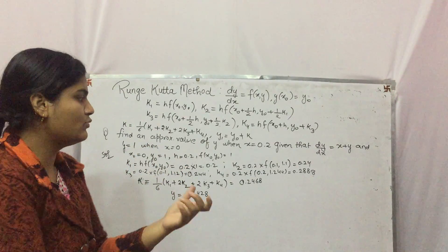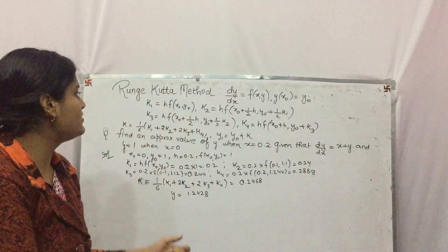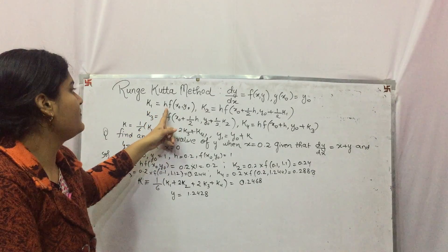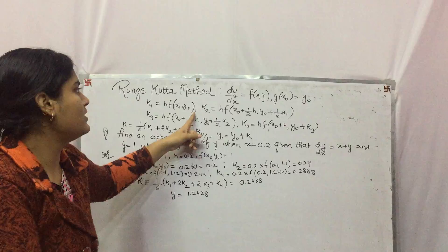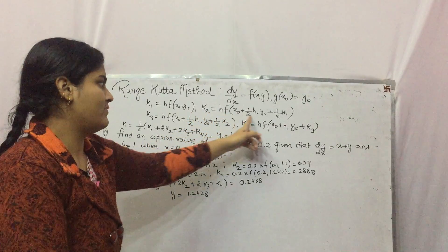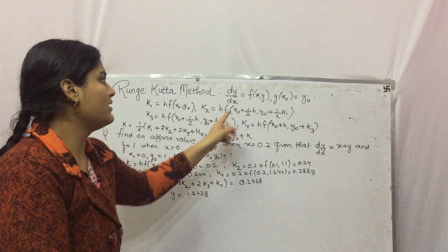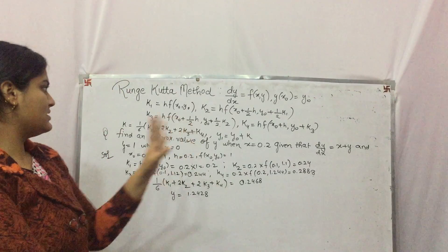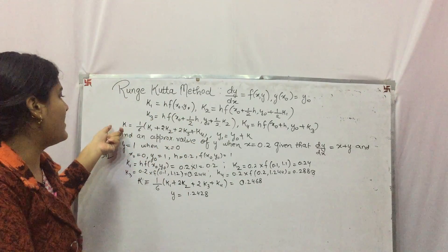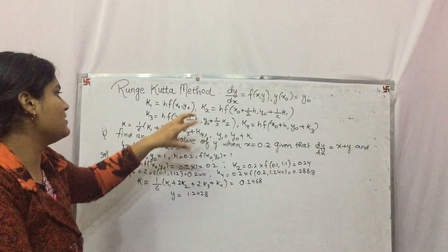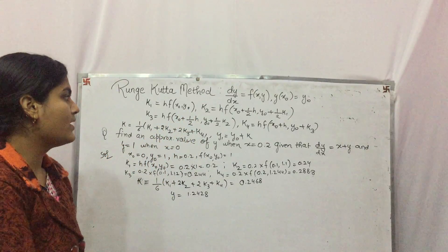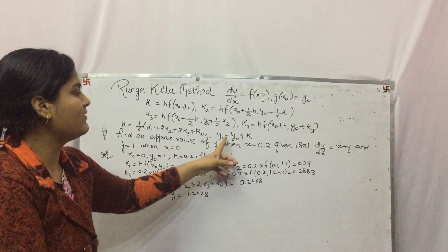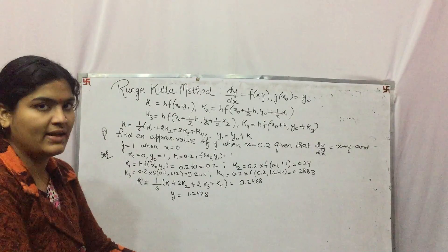The values of X and Y are given, which can be written as H·F(x₀, y₀). K2 is H·F of this X and this Y — these are your values. Finally, you have to find out K by using all of these, and the approximate value will be given by y₀ plus K.